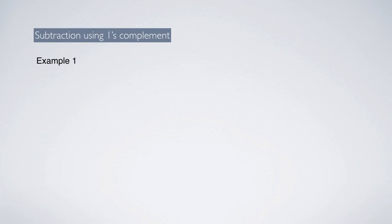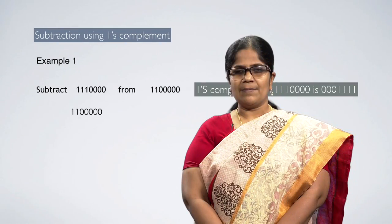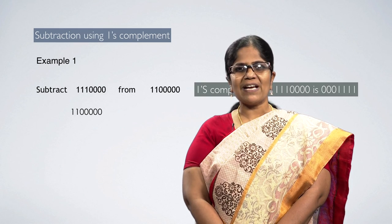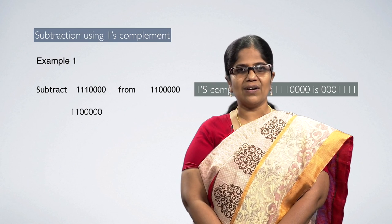Example 1: subtract 111000000 from 11000000. In this case, the first number 11000000 is taken as it is. Then for the second number 111000000, take the 1's complement. The procedure for 1's complement is: all the 1s should be converted to 0s, and similarly, all the 0s should be converted to 1s.